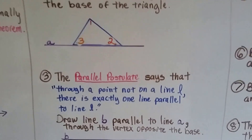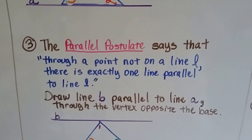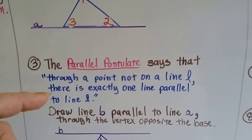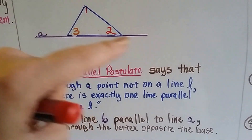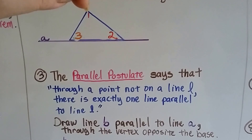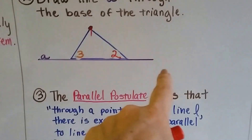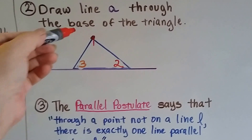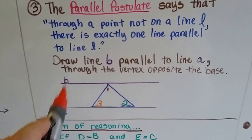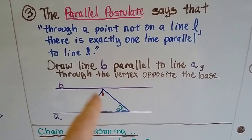Here's a postulate — a true statement that doesn't need to be proved, and that's where theorems and axioms come from. The parallel postulate says that through a point not on line A, there's exactly one line parallel to line A. The point would be the vertex of angle 1. Through this point, there's exactly one line parallel to the base line. So we draw line B parallel to line A through that vertex where angle 1 is, opposite the base.